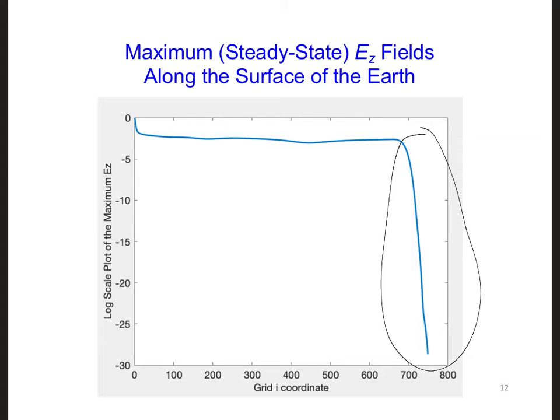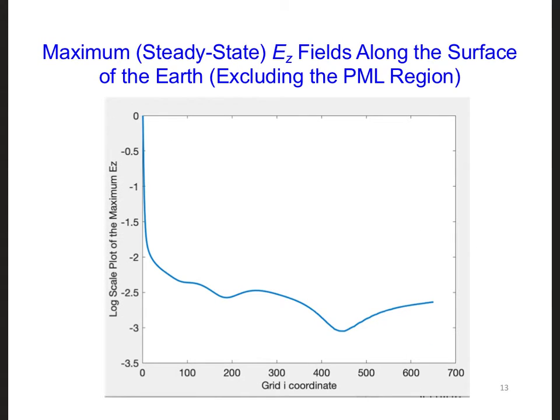So let's just plot from i equals 1 to i equal imax minus PML. This is what I get. As expected, the electric field has a value of 1 at the transmitter, which is 0 on our log scale of this plot. So we have a value of 0 at i equal 1.